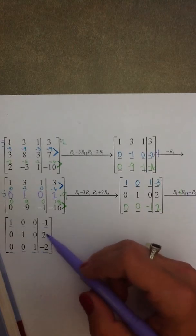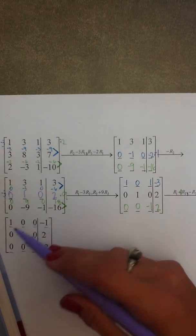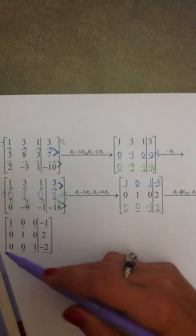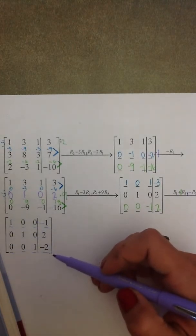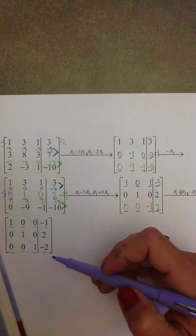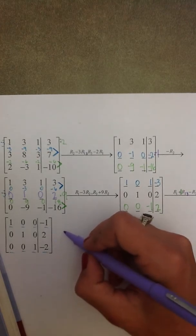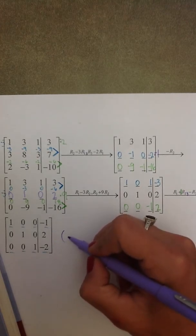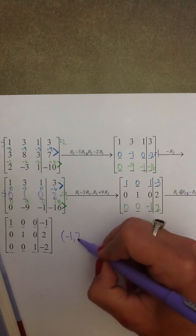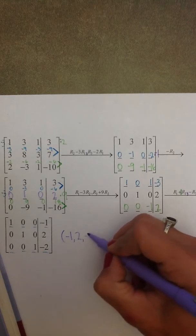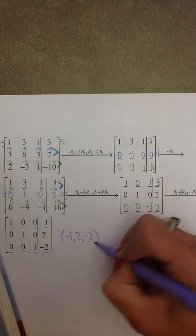This augmented matrix is now in reduced row echelon form. So I can identify the solution as negative one, two, negative two.